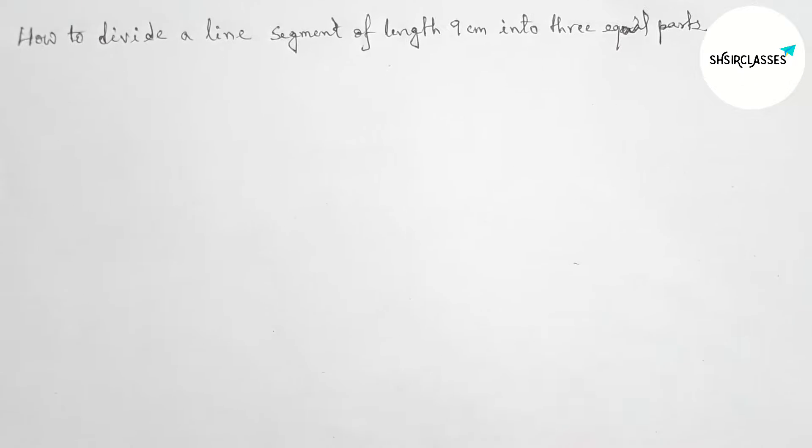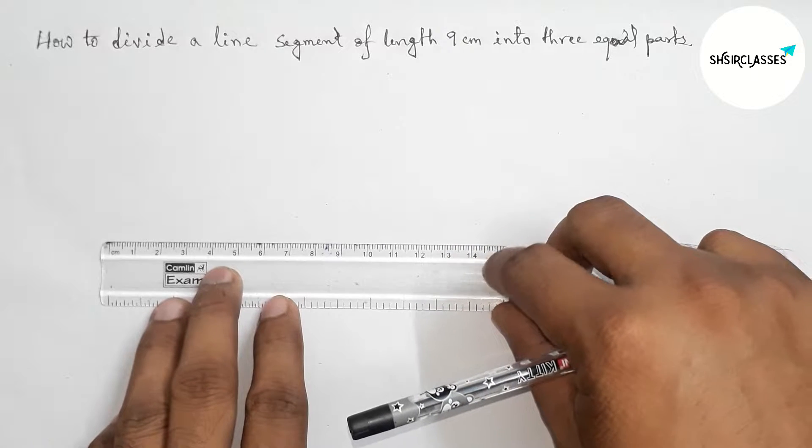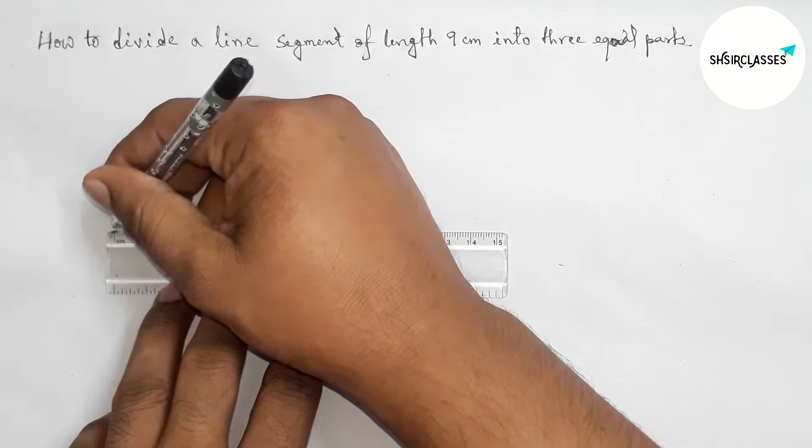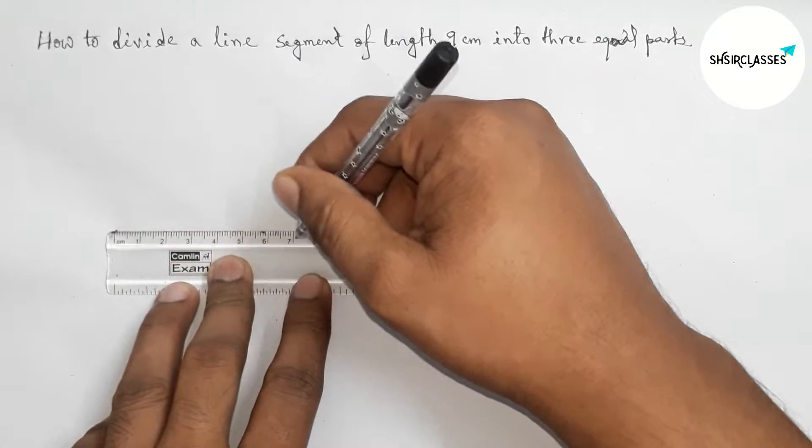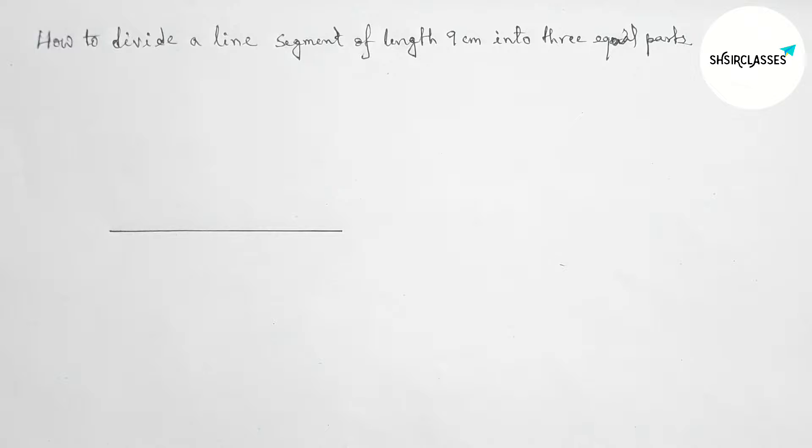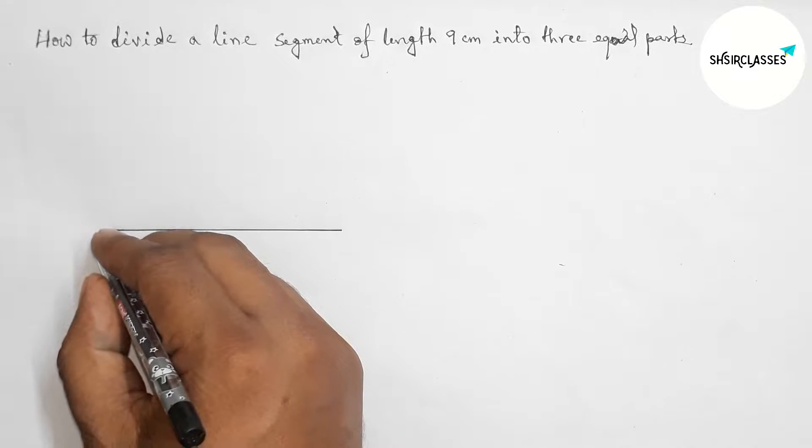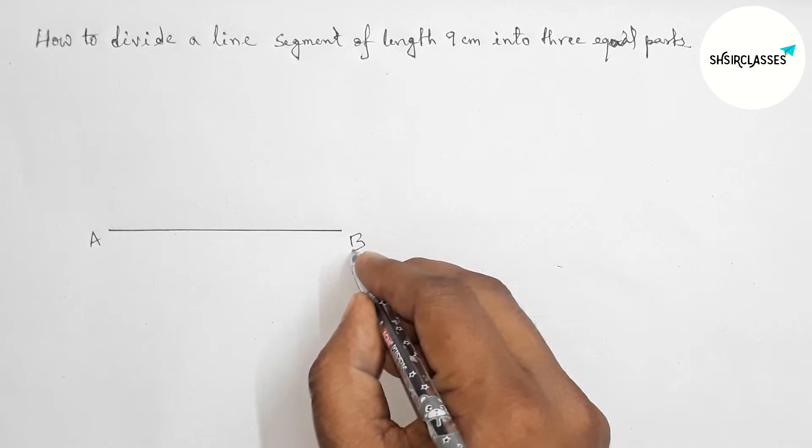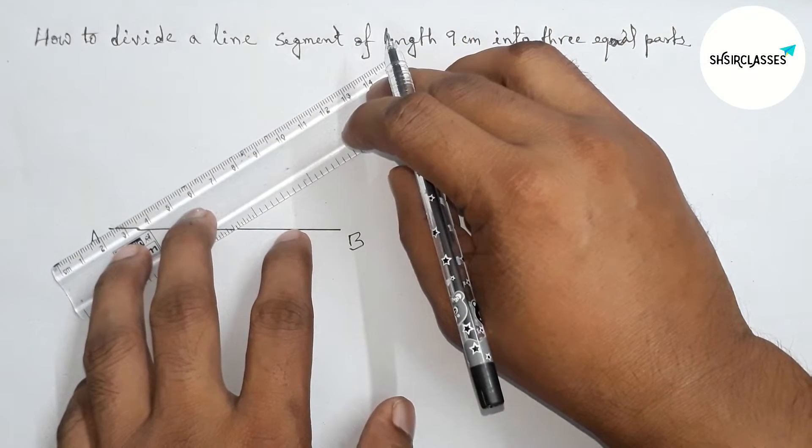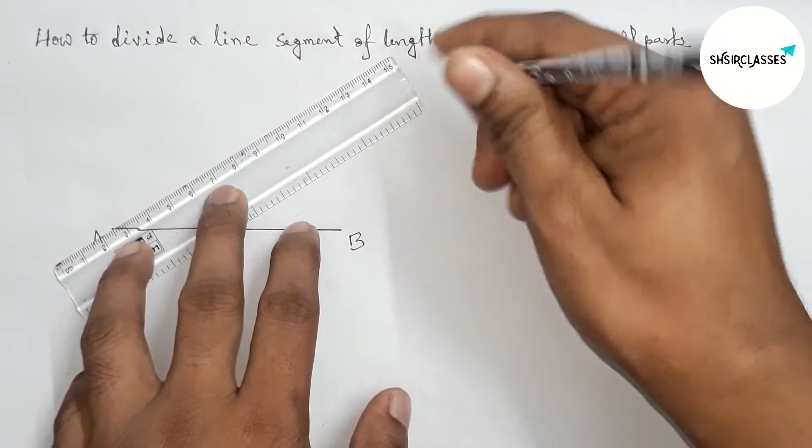First of all, let us draw here a line segment of length 9 centimeter. So this is 9 centimeter line segment. Now taking point here A and here B. Next, drawing any angle on the point A with the help of scale by this way.